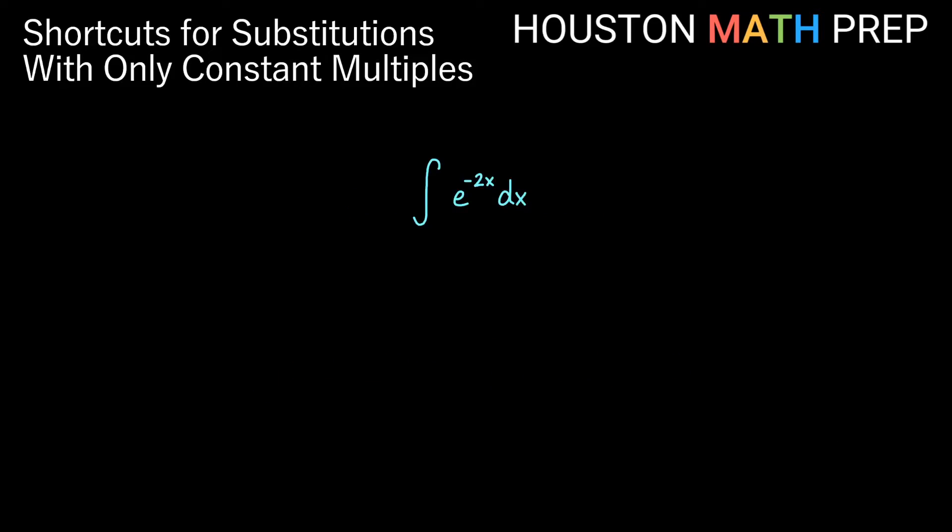We'll show you a few examples of where this applies here. So you notice in here we have the integral of e to the negative 2x. So really our constant multiple is negative 2 here.